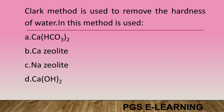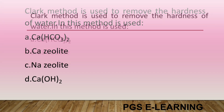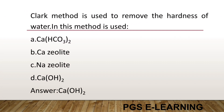Clark's method is used to remove the hardness of water. In this method, the substance used is: CaCO3, CaO, CaO, or CaO. Correct answer is CaO.